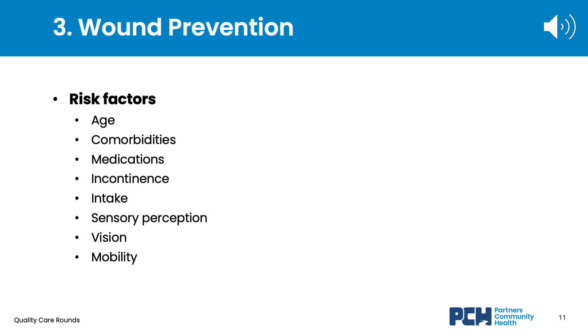Next, let's talk about how to prevent wounds. Some risk factors associated with wound development include advanced age, comorbidities such as diabetes, venous insufficiency, and dyslipidemia. Medications such as steroids and immunosuppressive agents, incontinence to bowel and bladder, and reduced intake leading to dehydration, skin dryness, and inadequate nutrition are also additional risk factors. Some others include decreased sensory perception as seen in neuropathy, poor vision which leads to tripping and slipping hazards, impaired mobility such as an unsteady gait, being bedridden, friction and shearing forces, and persistent pressure from immobility.